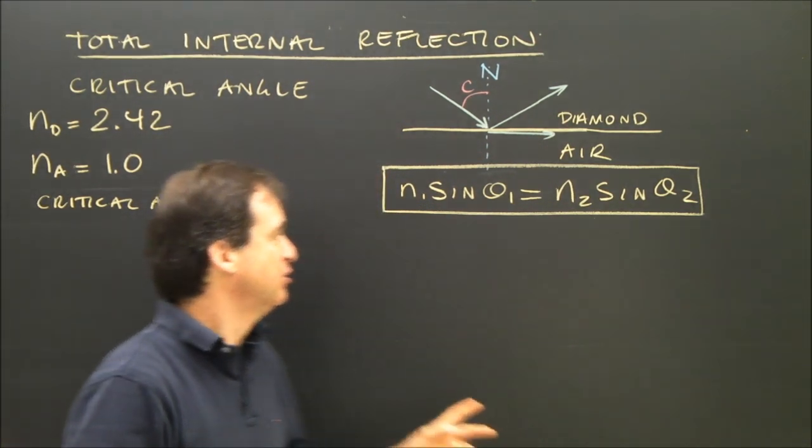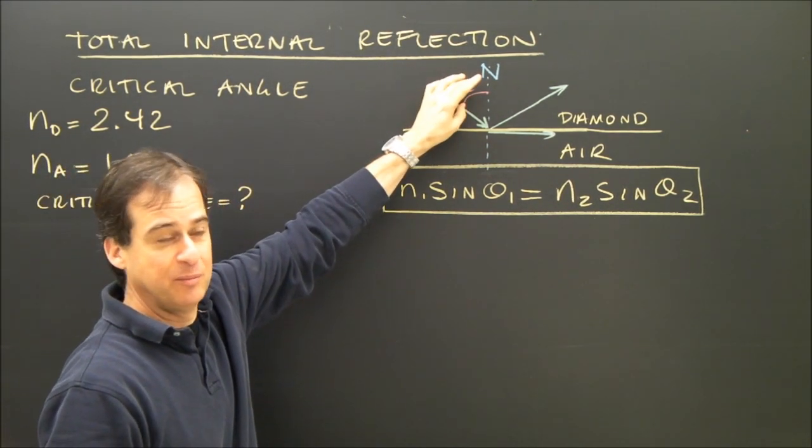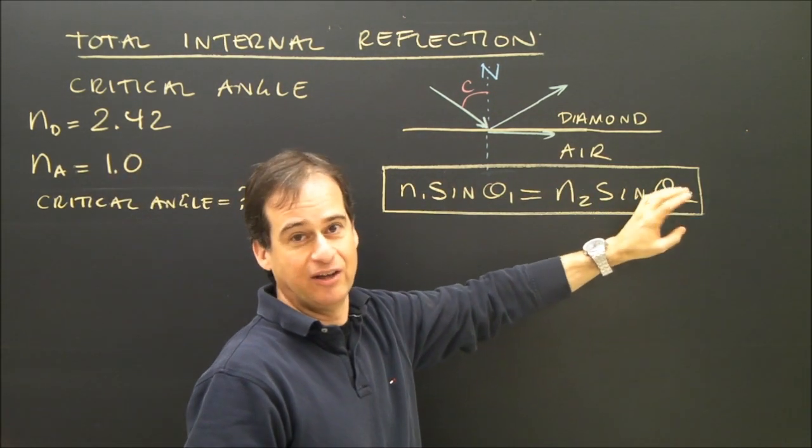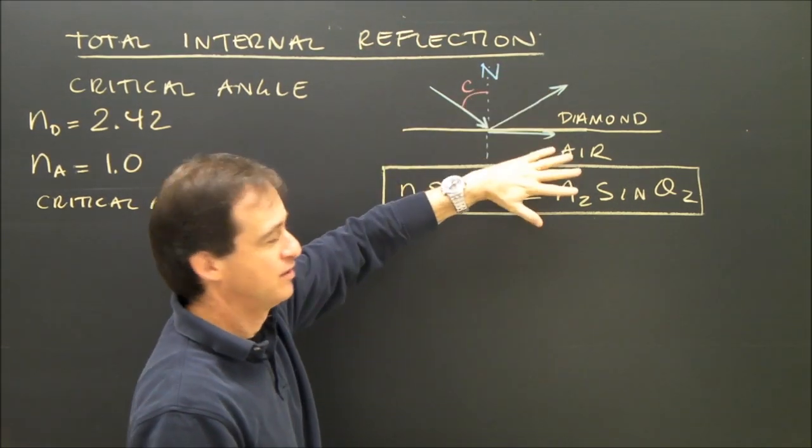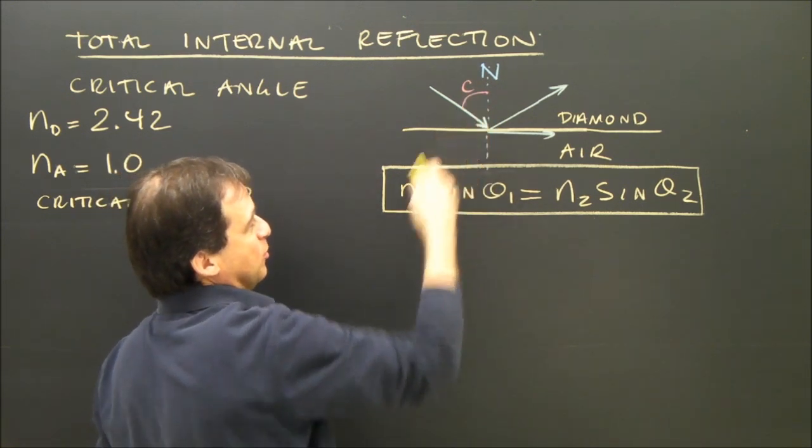The formula I use is the index in one material times the sine of that angle in that material. So I've got the diamond here, the air here, the light is coming in, and remember we measure the angles from the normal.